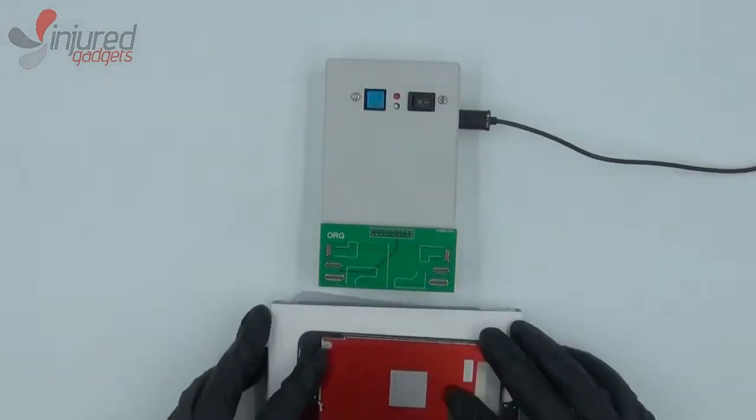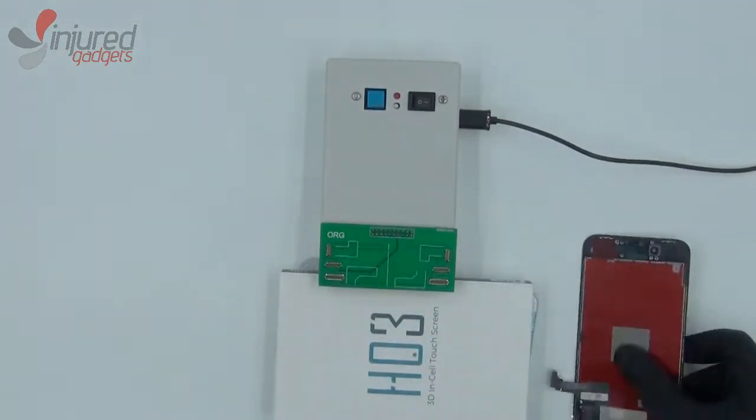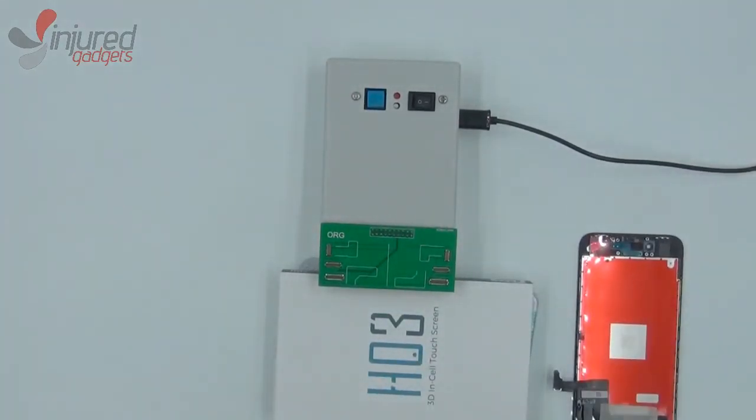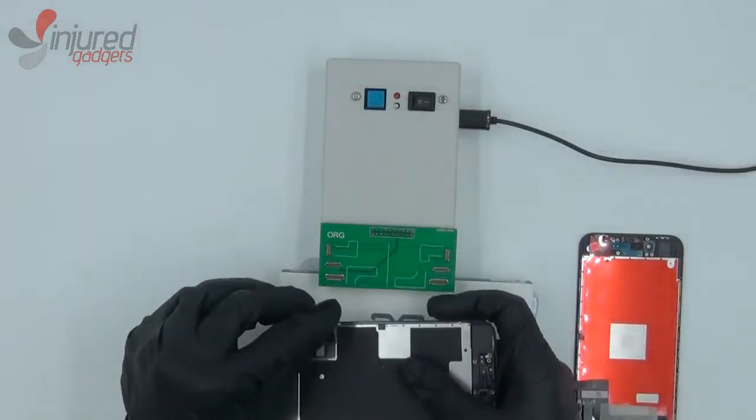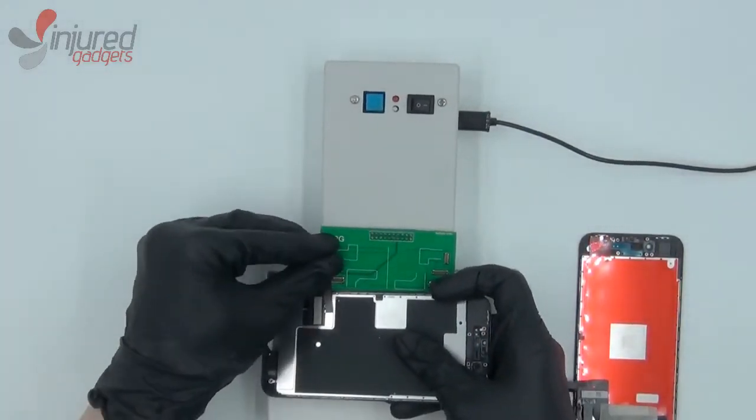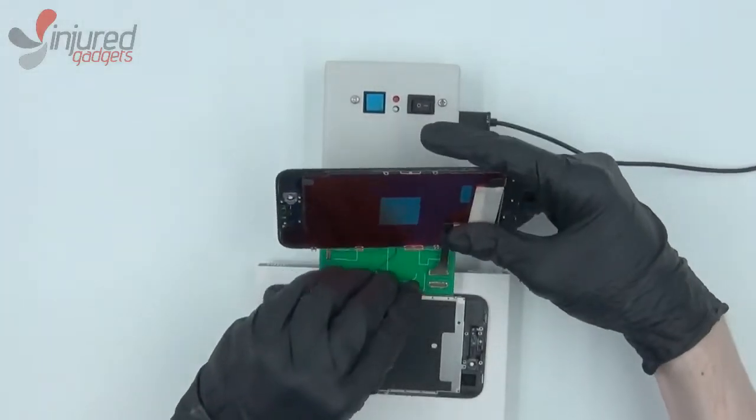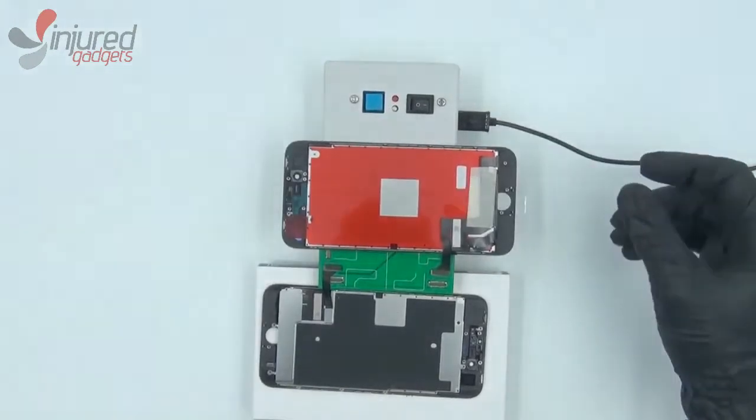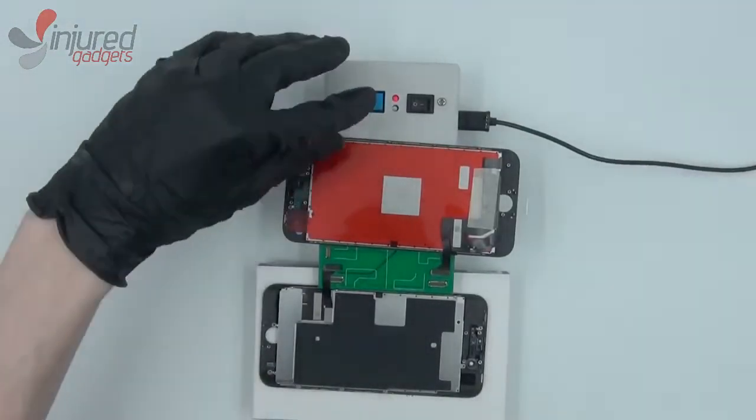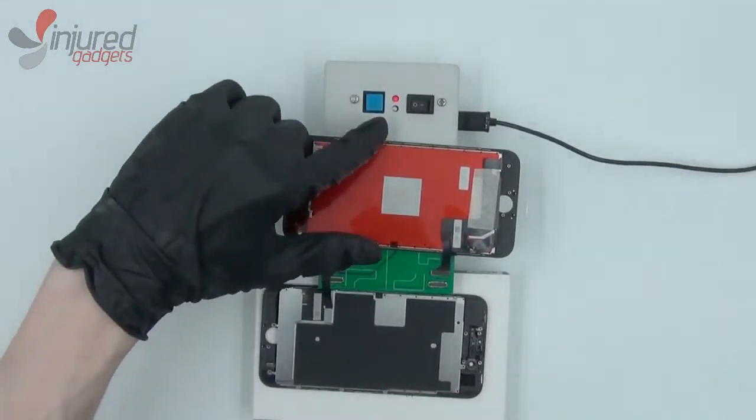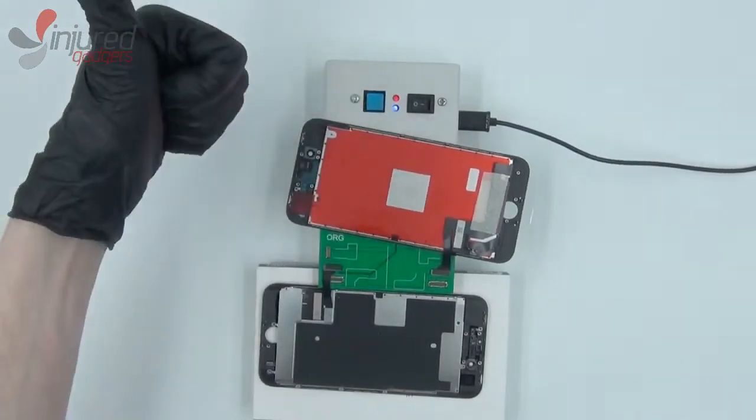Next we have the HO3 iPhone 8 screen and an OEM iPhone 8 screen. Now we'll do the same thing here by plugging the OEM into its FPC connector, and we'll do likewise with the replacement. Then power on the box, hit read write. Blue indicator means success.